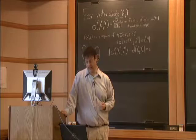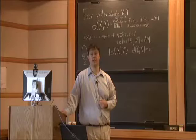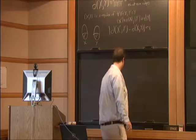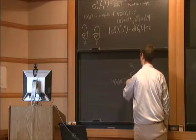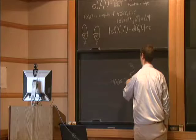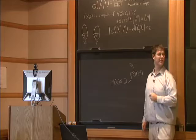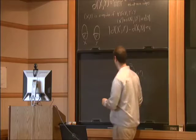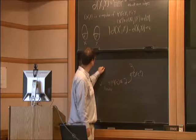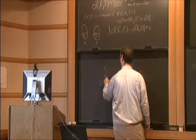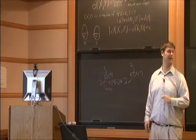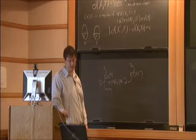For many applications it would be useful to have a good bound on m(epsilon). No matter how you try to prove it, you get a tower of twos of height roughly epsilon to the minus 5. And this is really necessary: Gowers showed you need a tower of twos of height on the order of epsilon to the minus 1/16. This is unfortunate because the regularity lemma is so powerful and for many applications you'd like to use it.